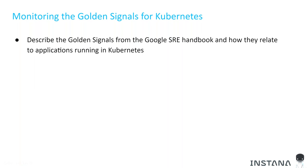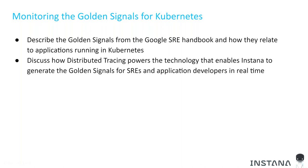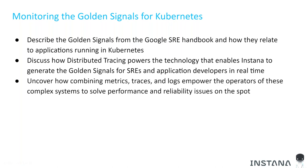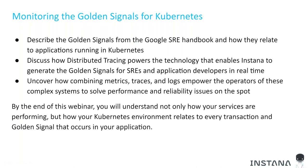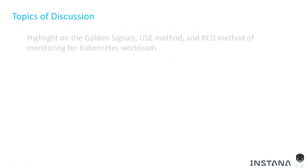Today we will describe the golden signals from the Google SRE handbook and how they relate to applications running in Kubernetes. We'll discuss how distributed tracing powers the technology that enables Instana to generate the golden signals for both SREs and application developers in real time. We'll also uncover how combining metrics, traces, and logs empowers operators of these complex systems to solve performance and reliability issues on the spot.